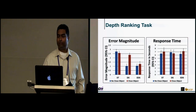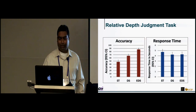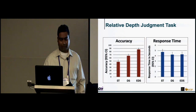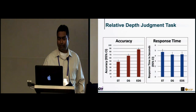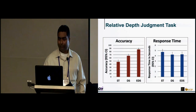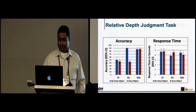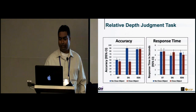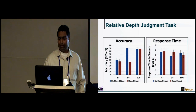For the relative depth judgment task, accuracy was much lower for static stereo and much higher for eye-tracked dynamic stereo, with no difference in response time. When divided by closer object condition, static stereo and dynamic stereo performed similarly when there was a closer object, and eye-tracked dynamic stereo and dynamic stereo were similar when there was no closer object.